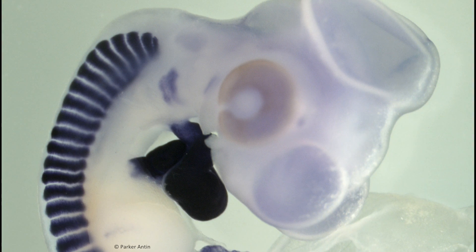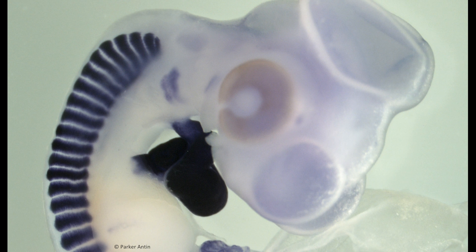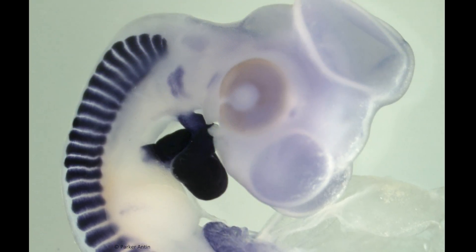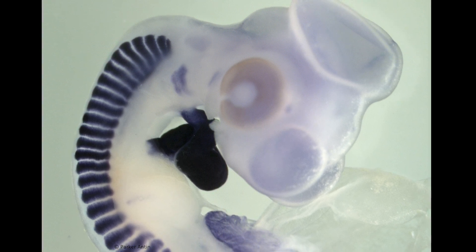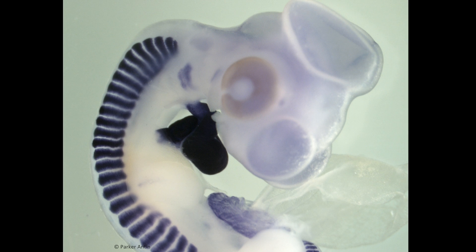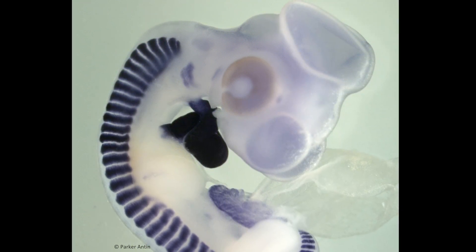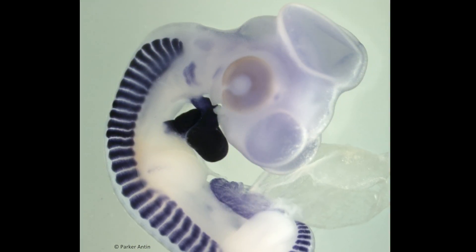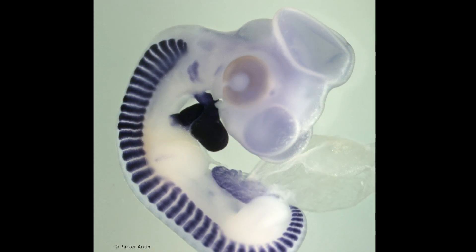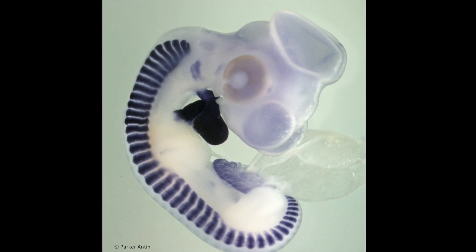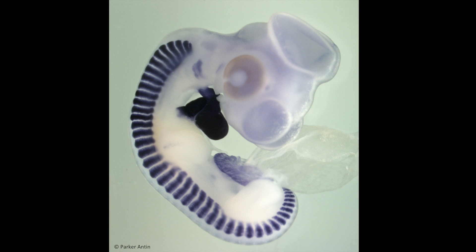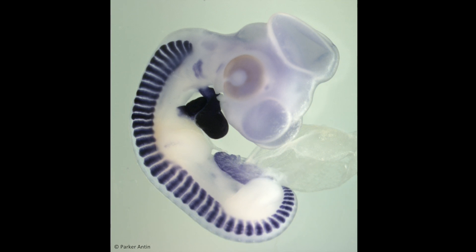And the first one that I want to cover is called in situ hybridization. This is a classic technique in developmental biology, and it's used to determine when and where mRNA for a gene of interest is expressed in the embryo. So traditionally, this is done with what's referred to as a colorimetric detection method. And that generates a deep blue purple color wherever your gene is expressed. Like in this example, showing an in situ for a gene expressed in the somites and the developing limbs of the chick embryo.